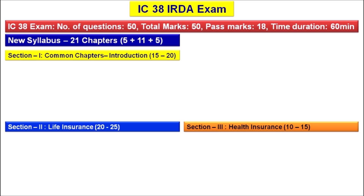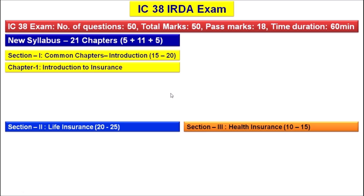As per the new syllabus of IC38 IRDA exam, there are 21 chapters divided into three sections: Section 1 - Common chapters introduction to insurance, Section 2 - Life insurance, and Section 3 - Health insurance. This exam consists of 50 questions in online mode, with 50 total marks. To pass, one has to score minimum 18 marks. The time duration is 60 minutes.